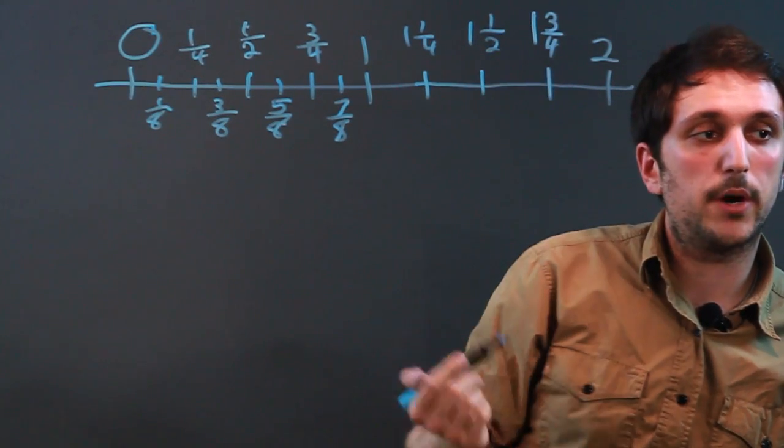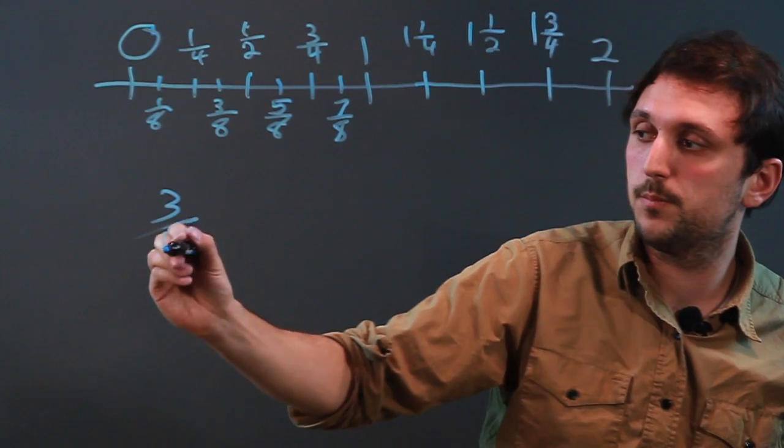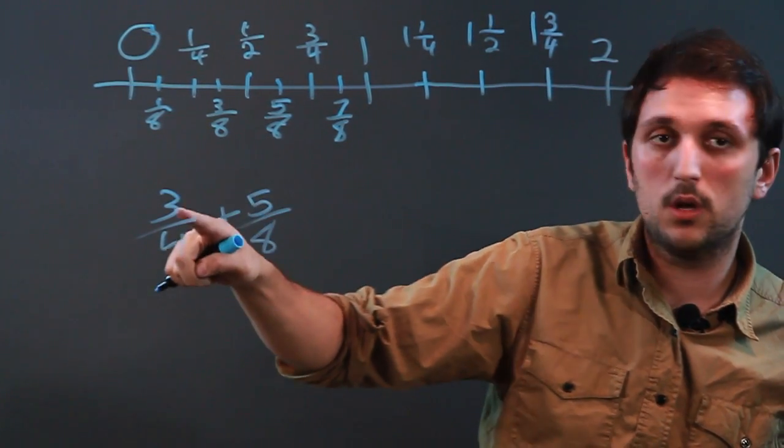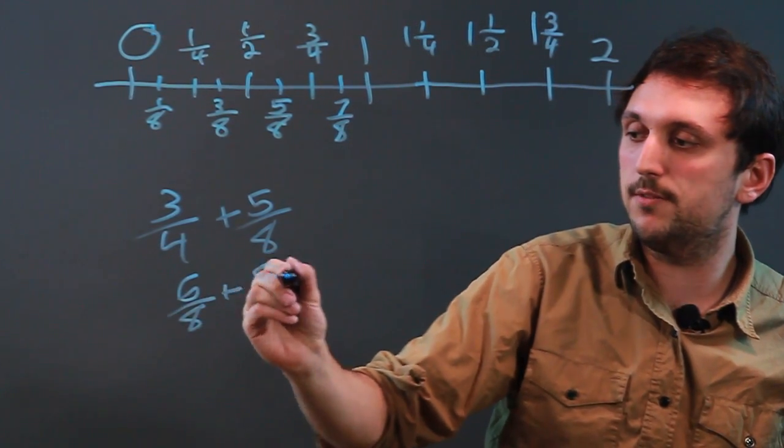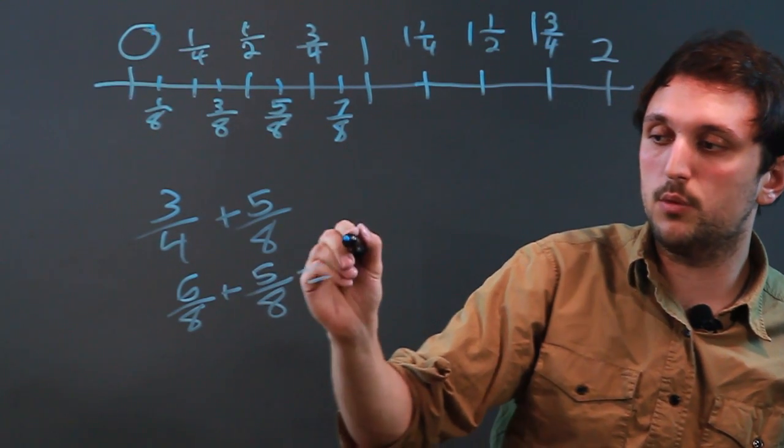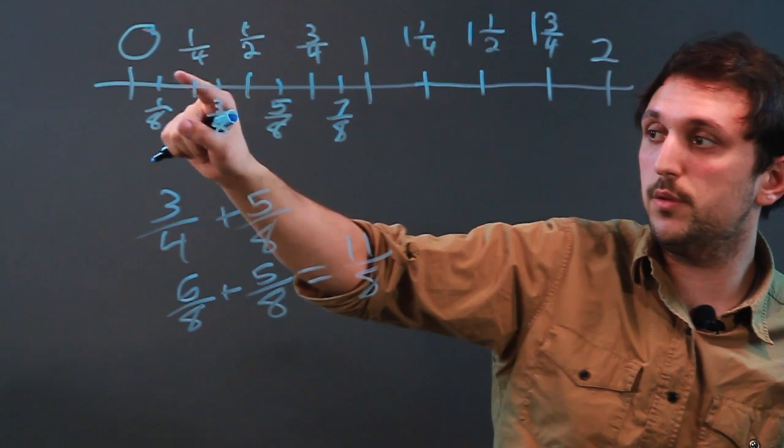So, let's say we have the problem three fourths plus five eighths. Well, three fourths is like saying six eighths plus five eighths, and that's going to equal eleven eighths.